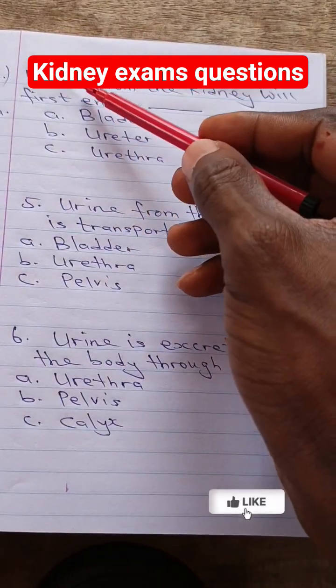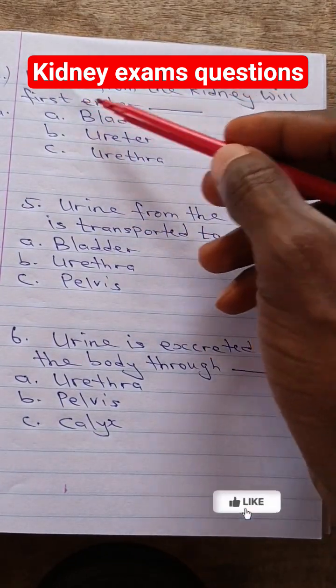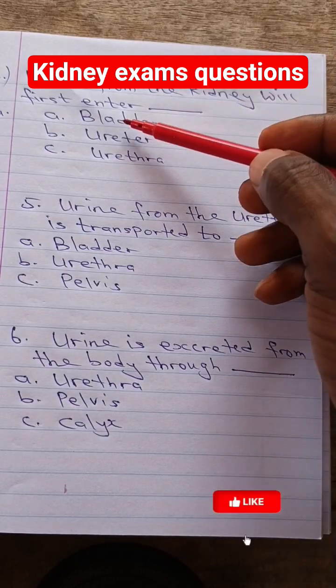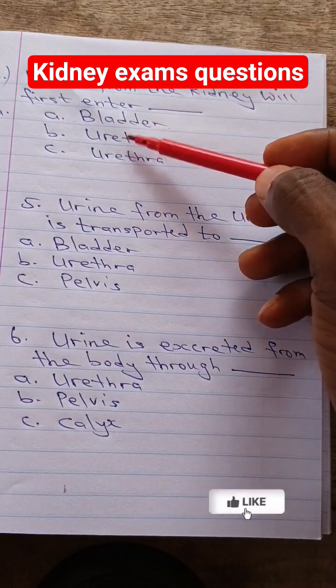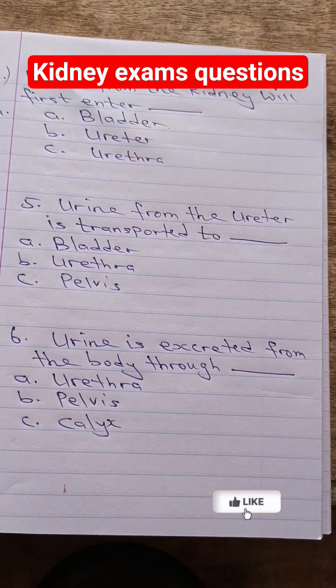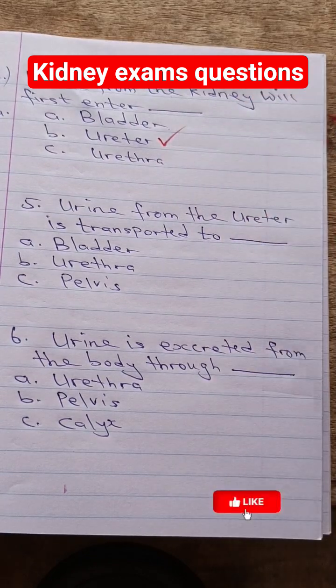Question 4: Urine from the kidney will first enter dash. Is it bladder, ureter, or ureter? Answer: ureter.